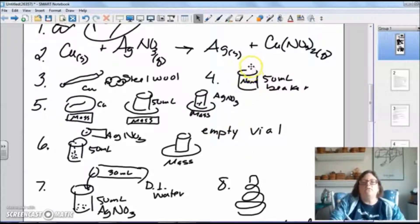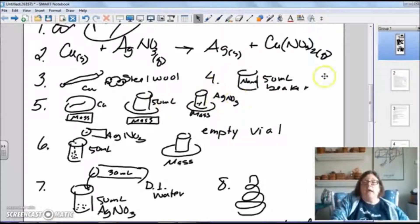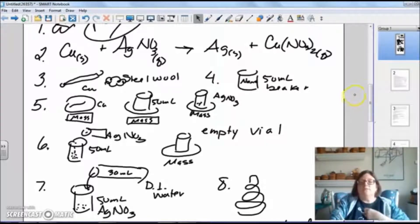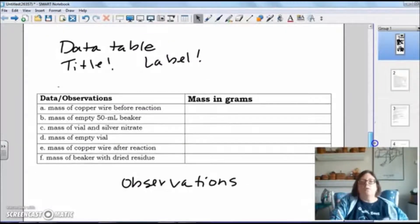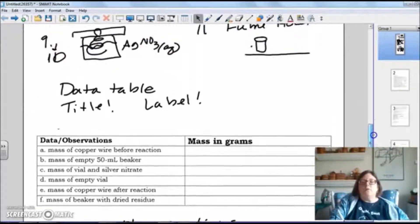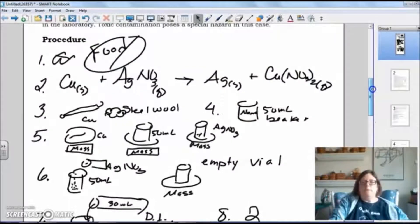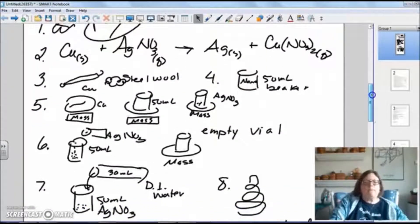Step four, you'll get a clean dry 50 milliliter beaker and put your name on it with a vis-a-vis pen. Step five, you need to mass the copper wire from step three. You're also going to mass a 50 milliliter beaker that you have your name on and you'll get a small vial of silver nitrate that'll be a little container of silver nitrate and you'll mass that. All that will be recorded in the data table that you're going to put at the bottom of this information, the procedure.